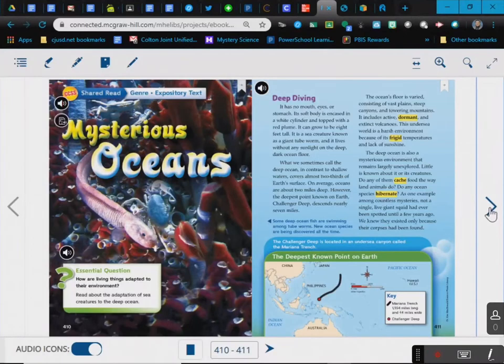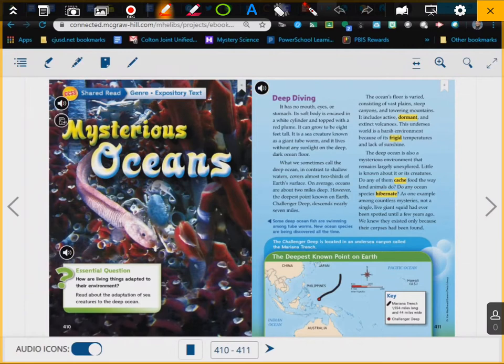Alright, let's go ahead and start with the story. The title of the story is Mysterious Oceans. It is an expository text, as you can see right here. Alright, and the essential question, remember the essential question: how are living things adapted to their environment? We're going to read about the adaptation of sea creatures in the deep ocean.